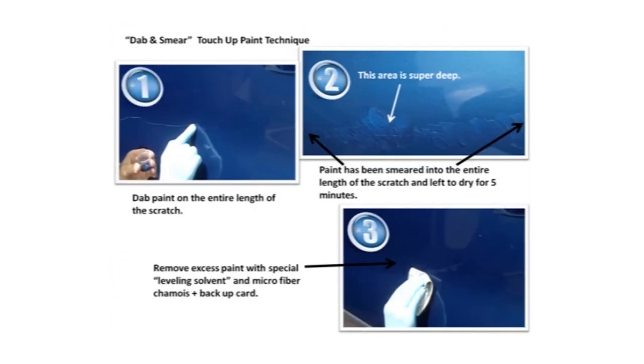So in step number one, we're actually just taking a gloved finger and dipping it in a container with our touch-up paint. And you can see in step two here that it's just smeared into the scratch and pretty minimal. You want to keep it pretty fine. You want to have the excess as minimal as possible on either side because we're actually going to remove all the excess.